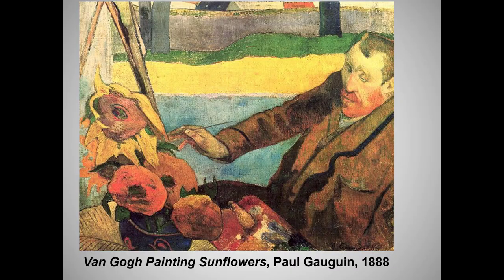Van Gogh was a friend and colleague of our next post-impressionist, Paul Gauguin. In fact, the two men spent two months together painting at Van Gogh's retreat in Arles. The visit ended badly. According to Gauguin's account, on the evening of December 23,